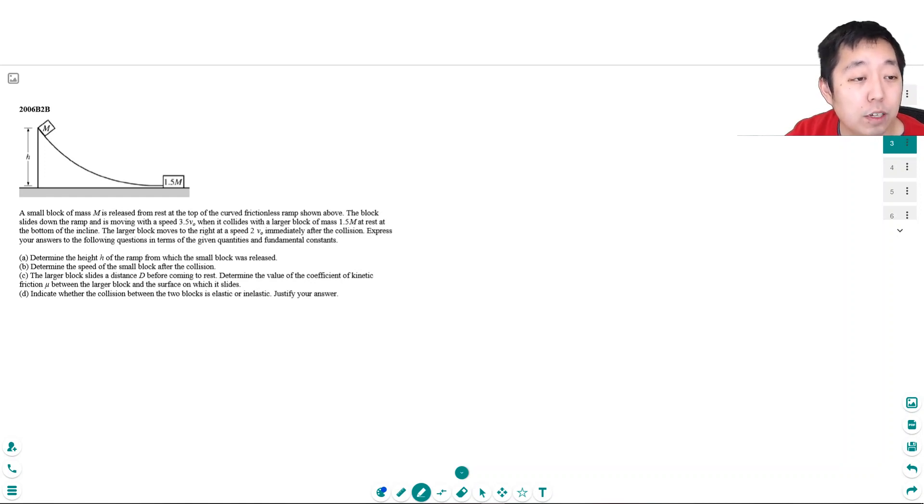All right, so I have a small block of mass M is released at rest from the top of the curve frictionless ramp as shown above. The block slides down the ramp is moving at a speed 3V0 when it collides with a larger block of mass 1.5M at rest at the bottom of the incline. The larger block moves to the right at 2V0 immediately after collision. Express your answers to the following questions in terms of the given quantities and fundamental constants. Determine the height of the ramp from which the small block was released.